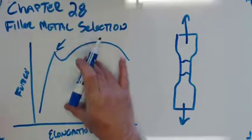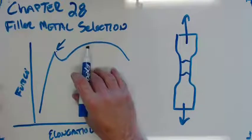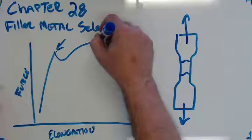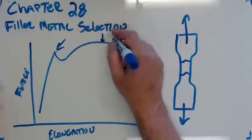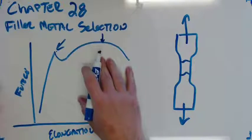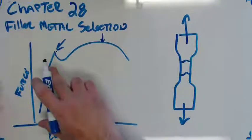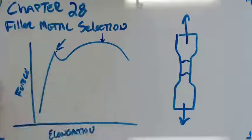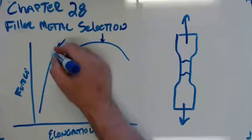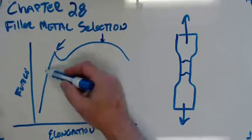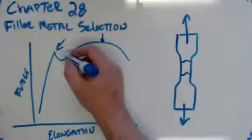When they classify steel, a lot of times they do it by tensile, which is the highest point on this curve, its maximum strength. Nowadays they'll do it by yield because that's more telling to people designing structures. This is its yield point, also known as its elastic limit.